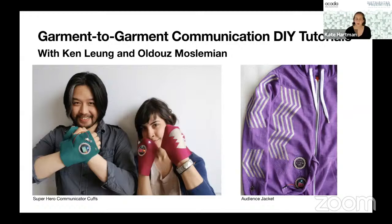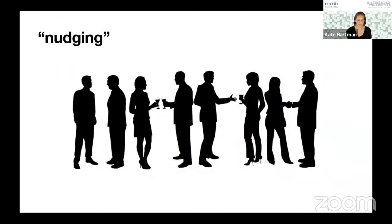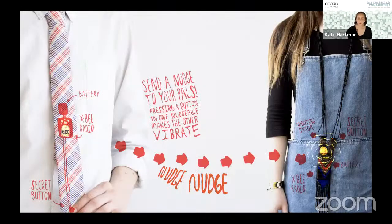For example, here we have something called the superhero communicator cuffs, where you can send a message to your superhero partner, or an audience jacket which would send a message to a local computer to make the sounds of an entire audience when you made particular gestures — thumbs down for a boo or hands up for a yay. From there we transitioned into the concept of nudging — in-room scenarios where you might be talking to one person but want to communicate with another through a subtle gesture sending a signal to your friend.